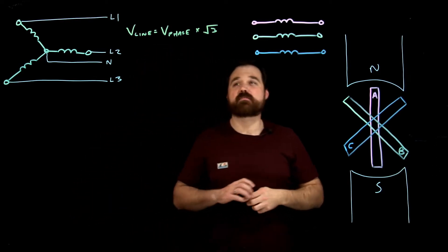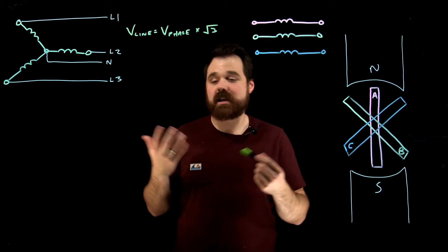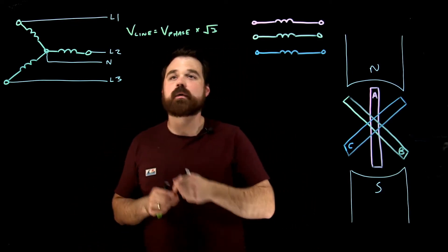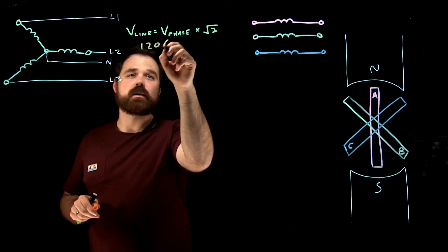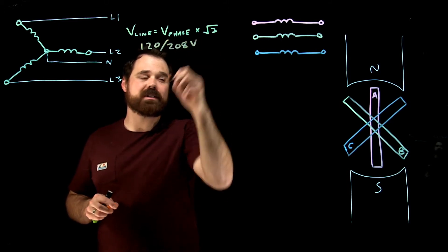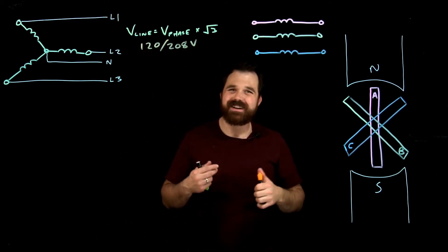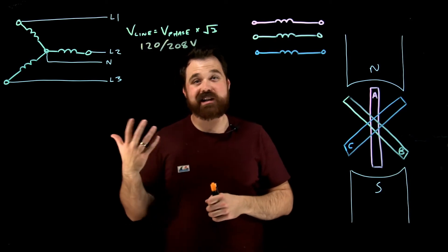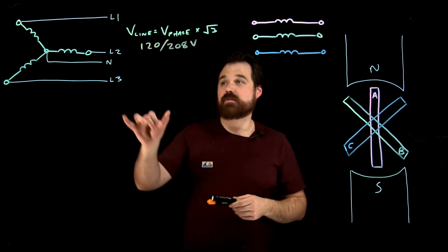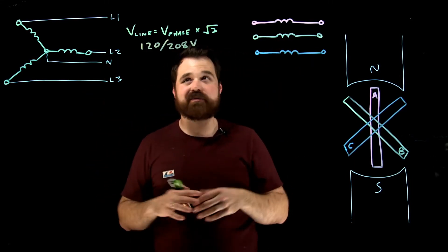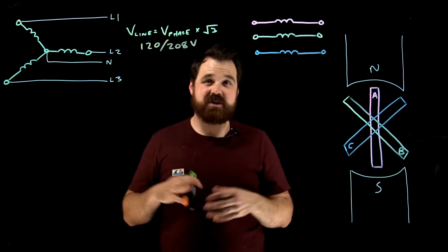All right, so we have that ability to have a higher line voltage. And in this case, if we were using 120, we would have a 120/208 volt system. So our voltage has the ability to be root three larger. Now, so the phase is still rated for that same 120 volts and whatever that current is.